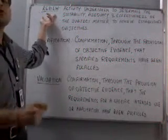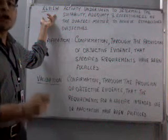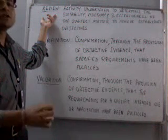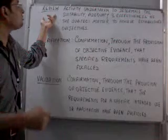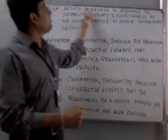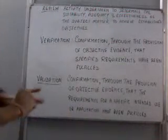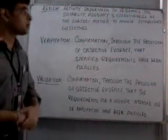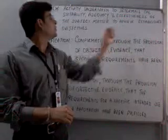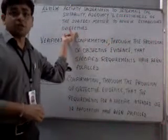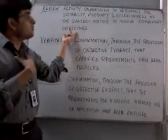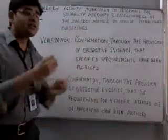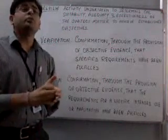As per ISO 9000-2005, which has the fundamentals and vocabulary for quality management systems, review is any activity undertaken to determine the suitability, adequacy, and effectiveness of the subject matter to achieve established objectives. How I infer review is checking for suitability, adequacy, and effectiveness.